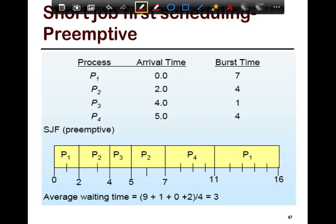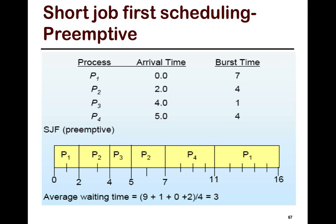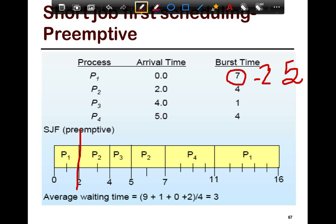If you have a preemptive scheduling policy, then what's going to happen is at time two, P2 has arrived. At time two, your P1 has run, it initially started with seven units, and it ran for two time slices, so at time two, its time slice would be five. And so it went from seven to five, seven minus two equals five. And so compared to P2, which has a time slice of four, and this one has a time slice of five, P2 is shorter, so you pick P2.